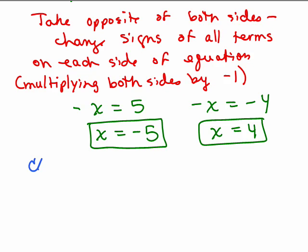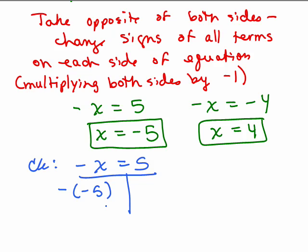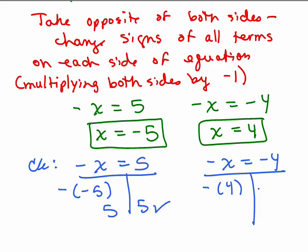If you were going to check each of these: negative x equals 5, plug in negative 5 for x — you should be convinced that's true. And when we check the other one, negative x equals negative 4, we plug in 4 for x and you get the same number on both sides. So that's how you deal with it if you have a minus sign in front of the variable.